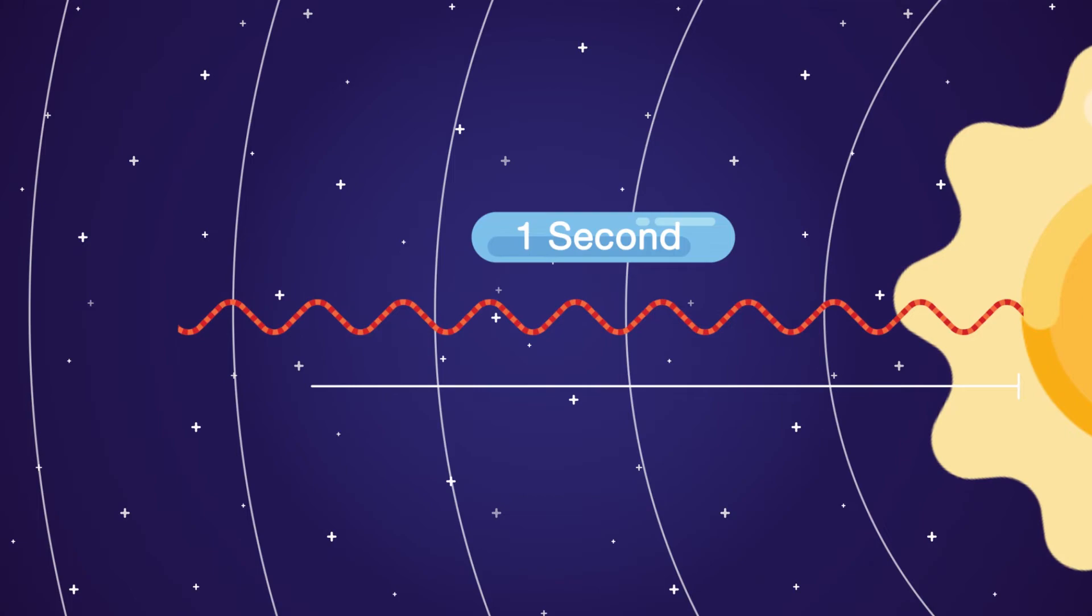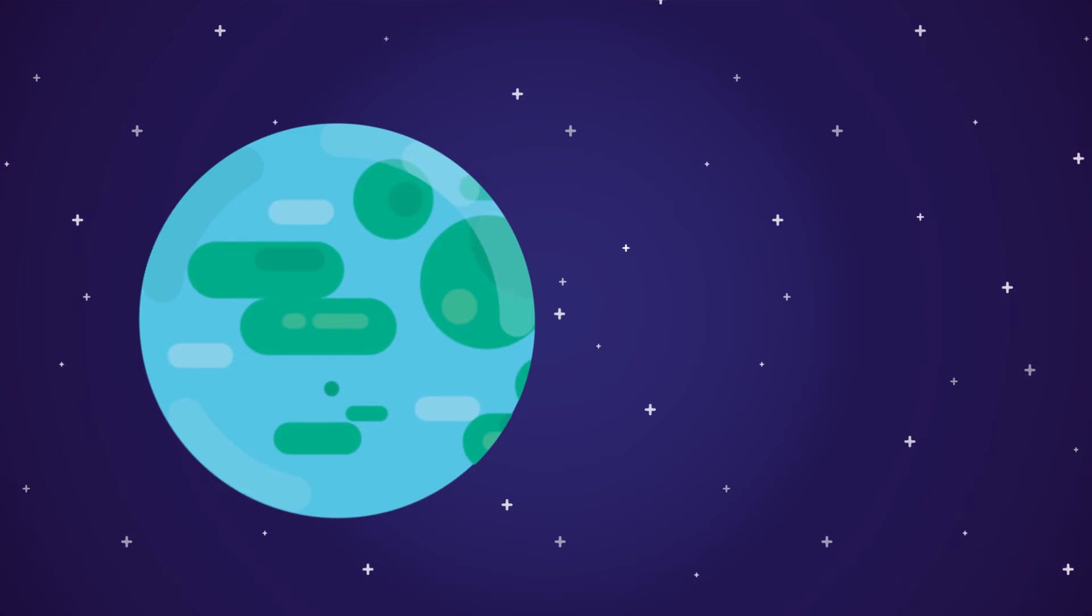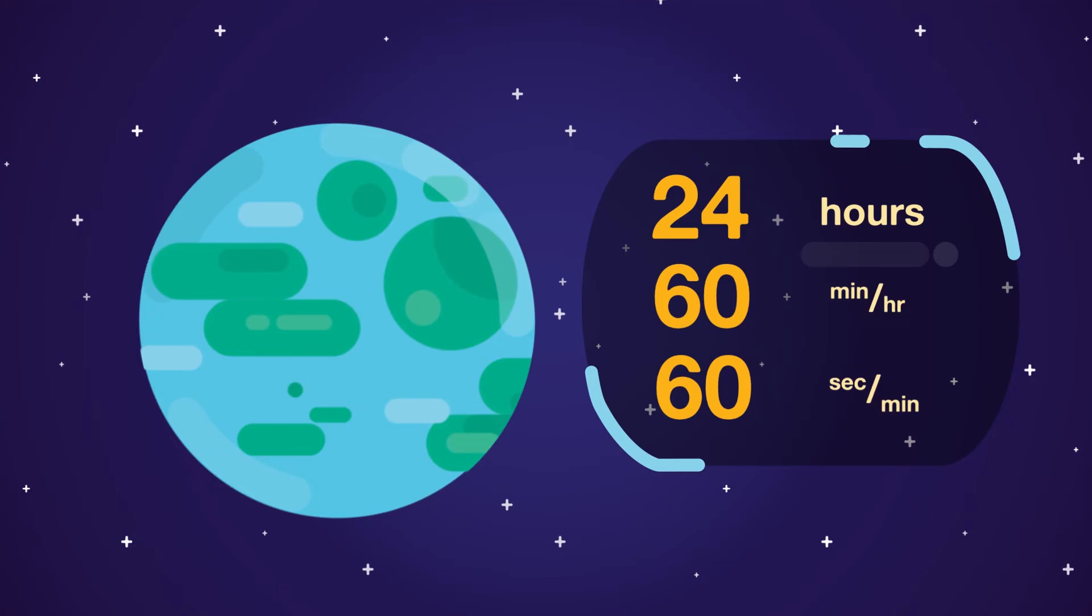We also know that a mean solar day is 24 hours, with 60 minutes per hour and 60 seconds per minute, multiplied together equals 86,400 seconds.